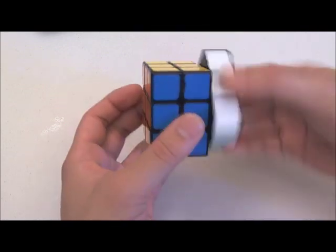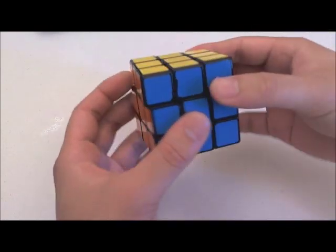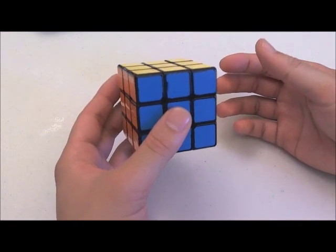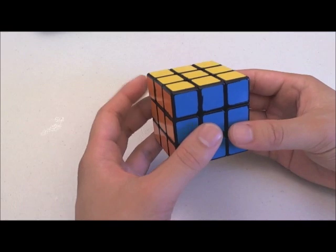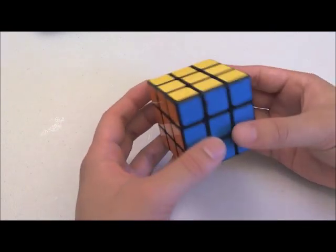The important thing is to not obstruct this layer or this layer. Because these two are the layers that you'll be turning the most. So to get started in turning, the first turn I recommend trying is U prime because it's very similar to doing a U prime with both your hands.